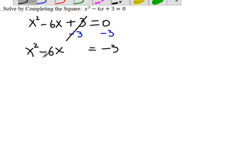Now, in order to make a perfect square, we're going to add a number here. The number we're going to add is supposed to be half of the b and then square it.